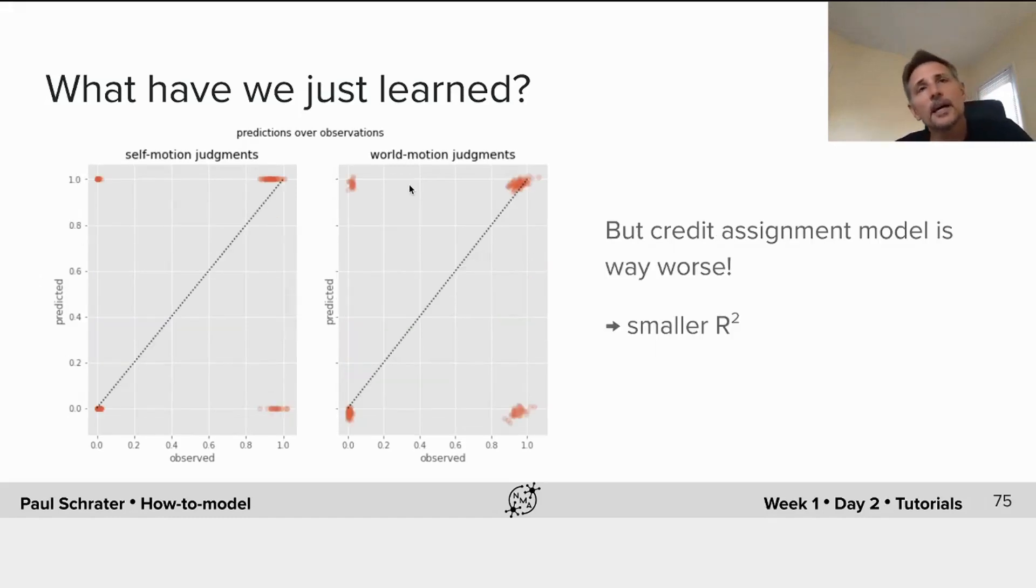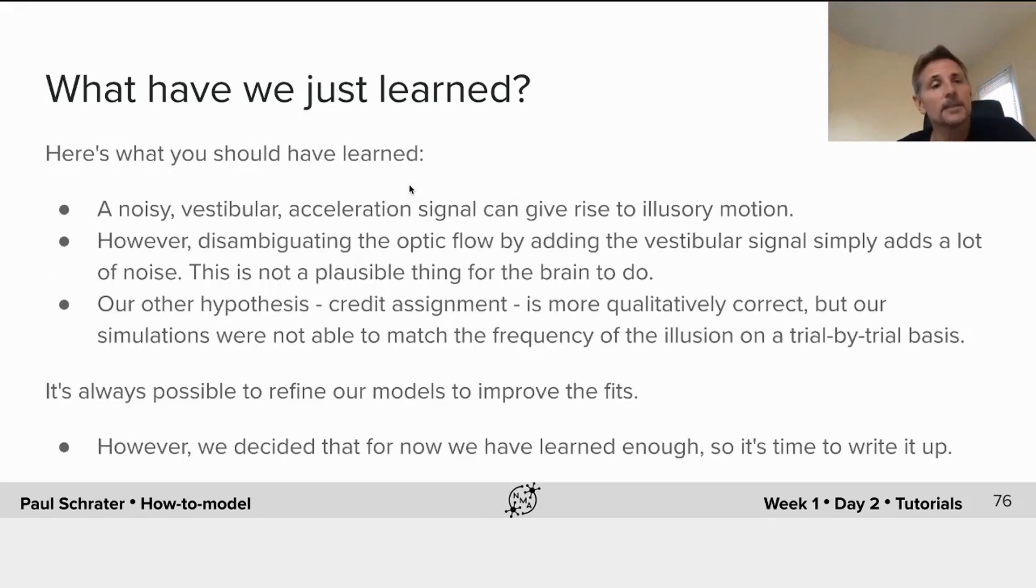And in fact, our alternative hypothesis, which looks at first glance to do a better qualitative job, quantitatively only made things worse. We should have learned at this point that a noisy vestibular acceleration signal can give rise to illusory motion.